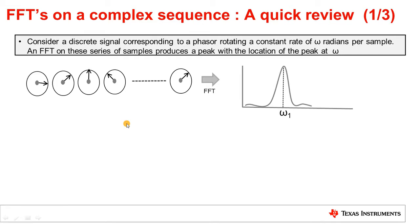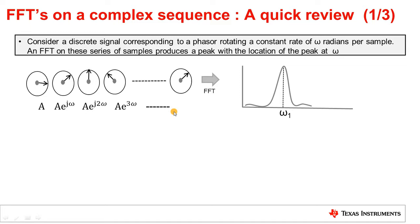So far, we've been talking about Fourier transforms on a continuous time signal. Similar concepts are also valid for discrete signals. Here you have a discrete signal consisting of a phasor rotating at a constant rate of omega radians per second per sample. So between any two samples, this phasor has rotated by omega. We will use the term discrete angular frequency, or sometimes just frequency, to refer to this omega. A discrete Fourier transform of the sequence would result in a single peak in the frequency domain at the discrete frequency omega 1.